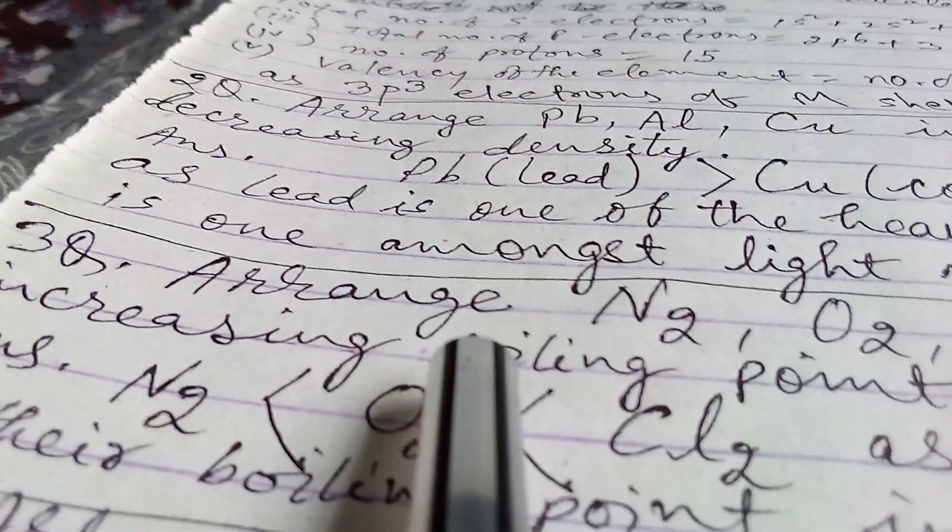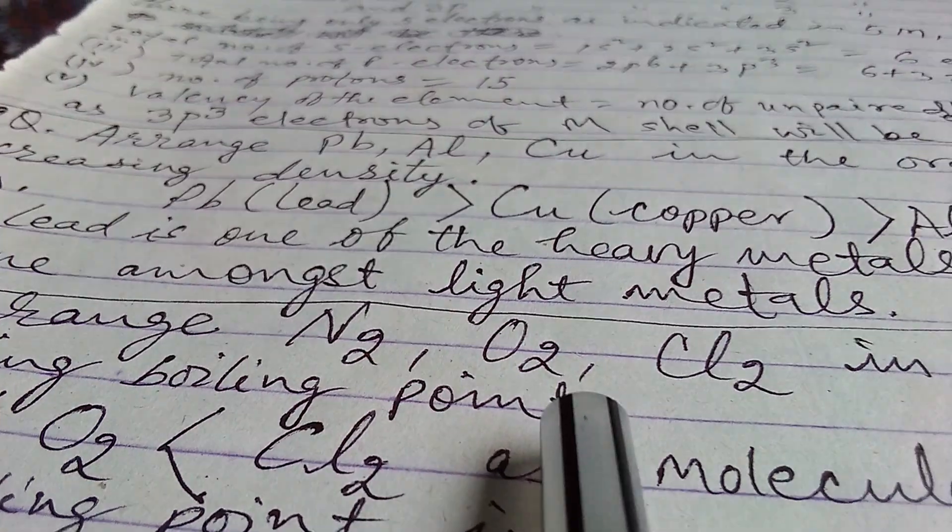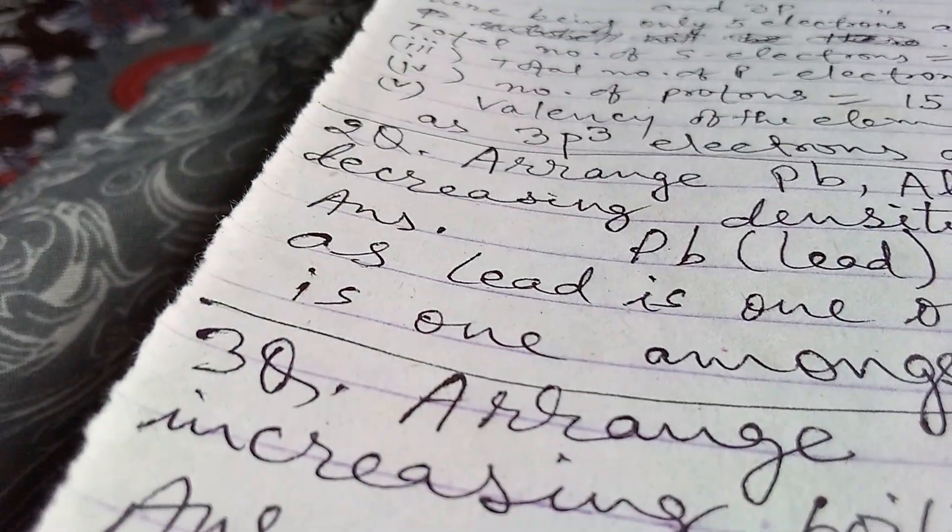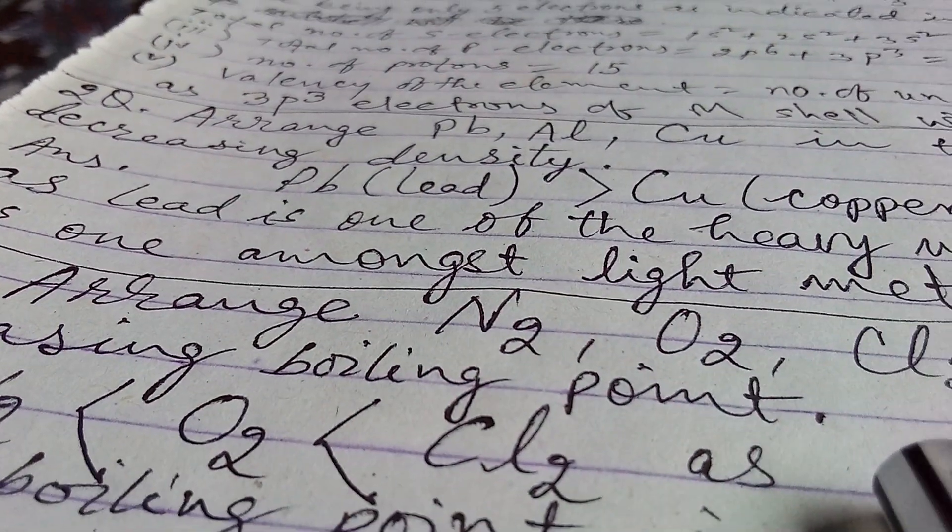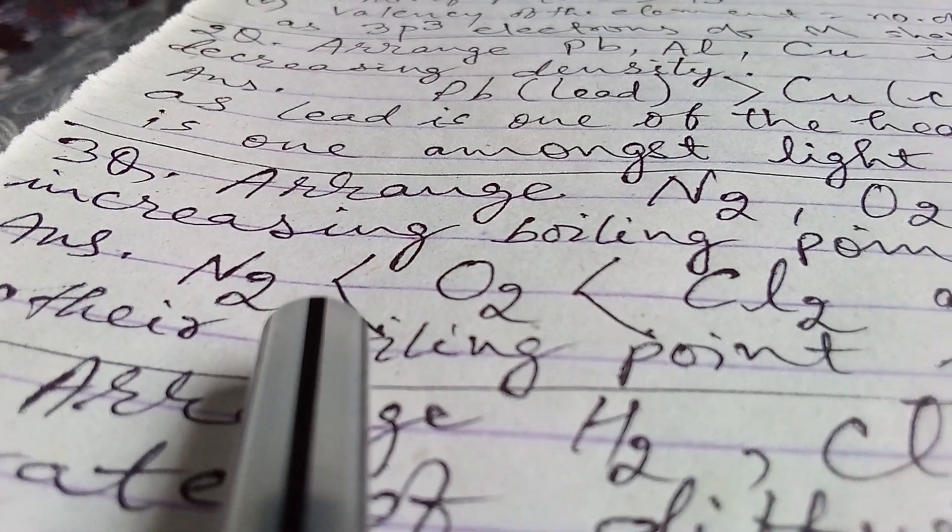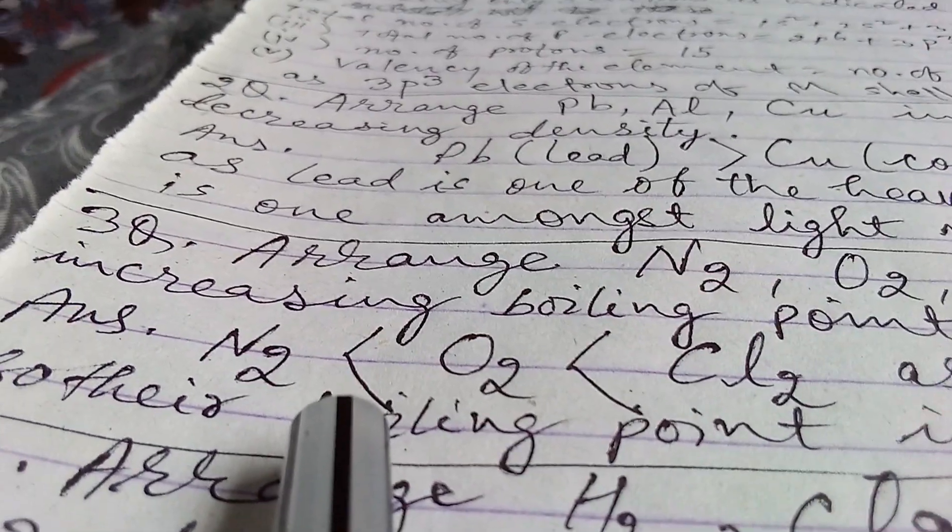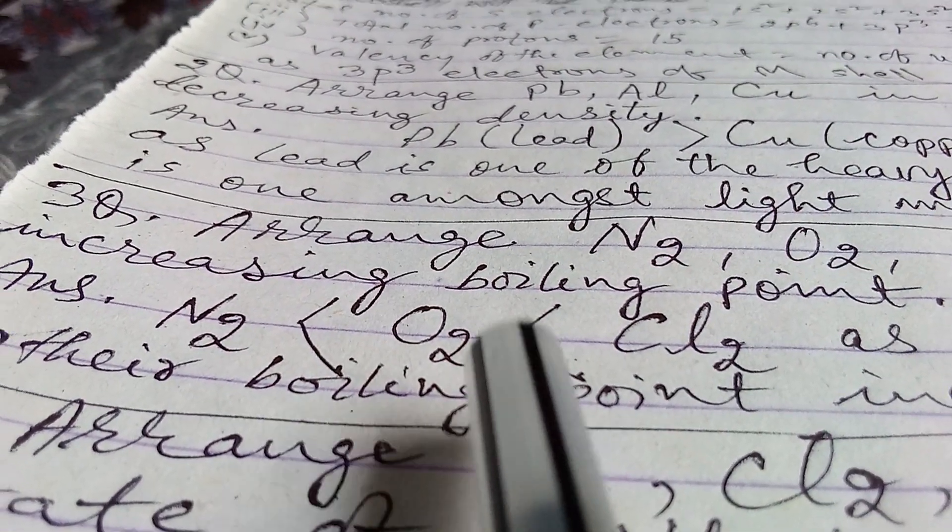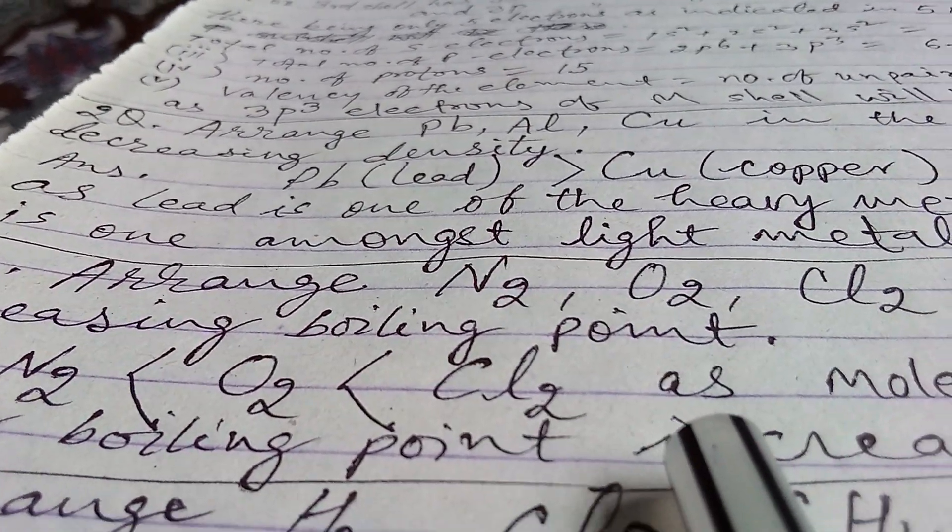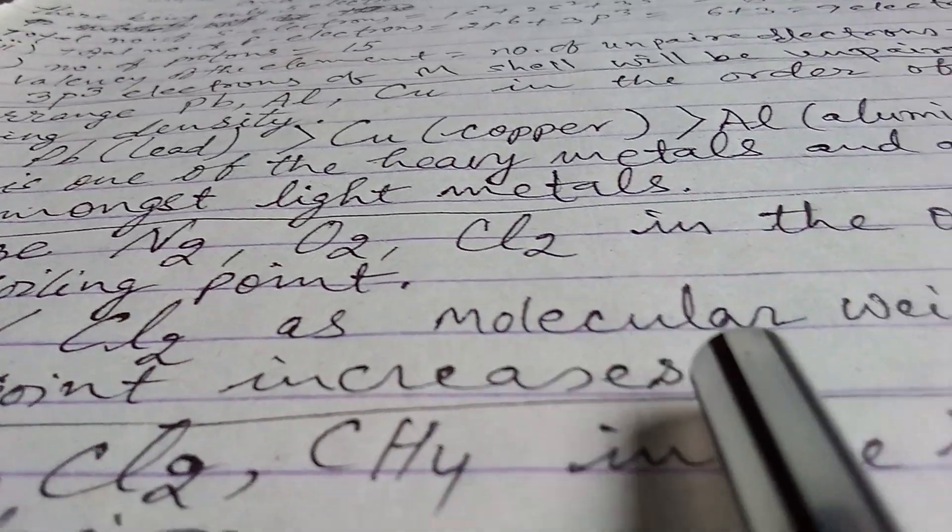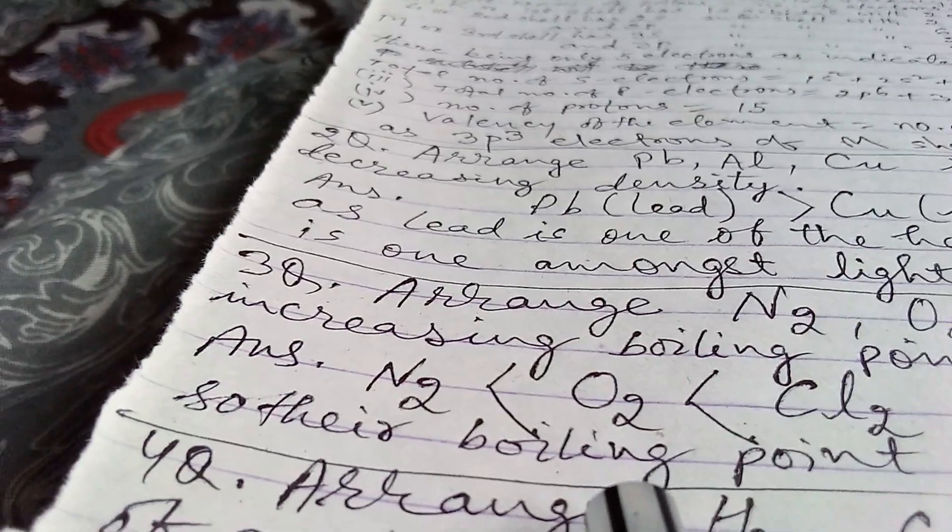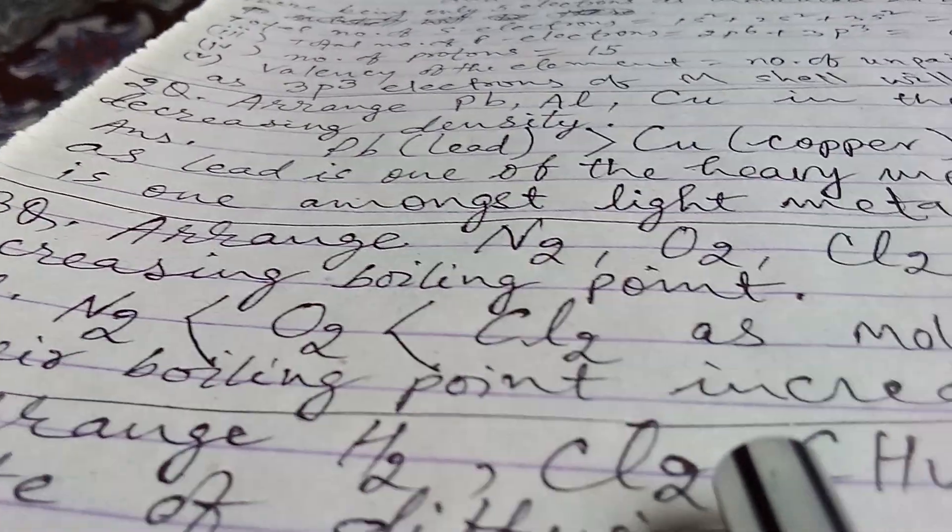Third question is: arrange N2, O2, Cl2 in the order of increasing boiling points. So answer is N2 is less than O2, and O2 is less than Cl2. So we can say that as molecular weight increases, their boiling point increases.